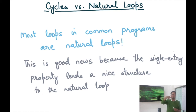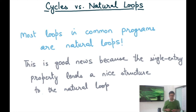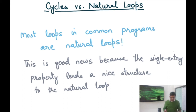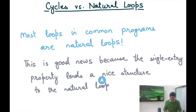All common loop constructs — for, while, do-while, repeat-until — create only natural loops, because you always enter from the header. You can only create non-natural loops by using goto, which is one reason goto usage is discouraged: it breaks the structure of the program and makes it much harder to reason about correctness and optimization possibilities. The single-entry property lends a nice structure to the natural loop.